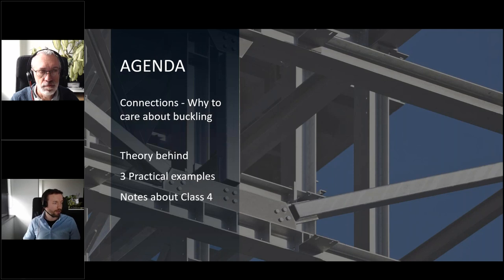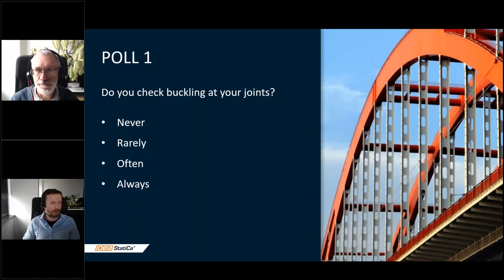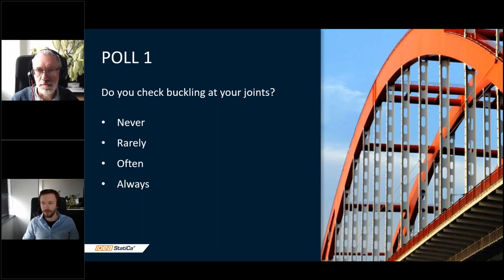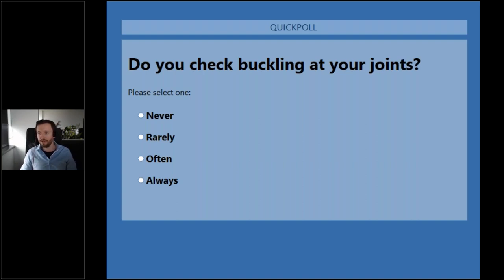The agenda for today covers: buckling in connections and why to care about buckling as the first part, then the theory behind it, three practical examples presented by Alex, and notes about cold-formed profiles or Class 4 cross-sections according to design standards. We'd like to start with a poll, because we're curious about your standard workflows — do you check buckling at your joints? You can select from: never, rarely, often, or always.